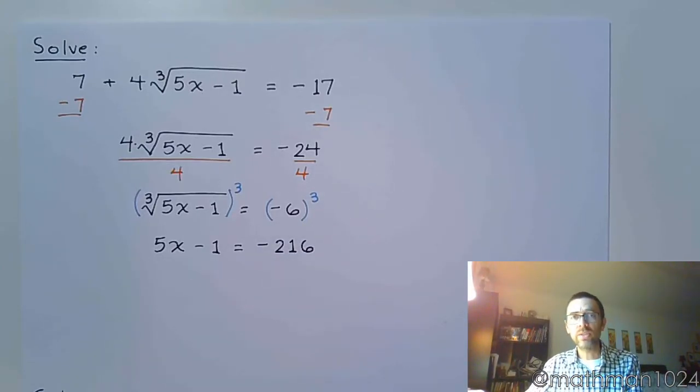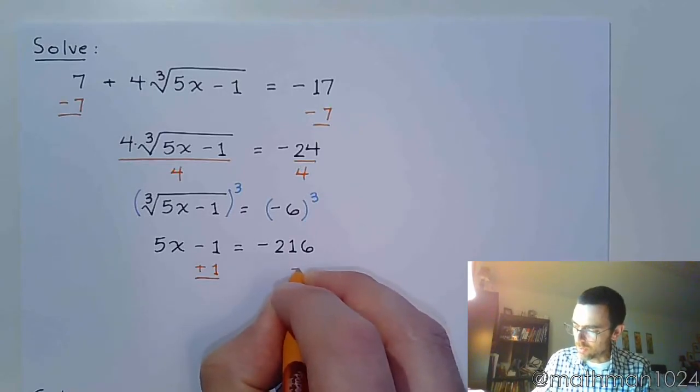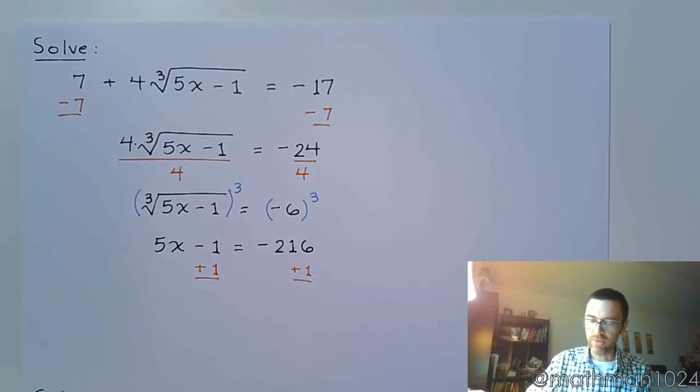And at this point, it's just a nice, simple, linear equation for us to solve. So now we just add 1 to both sides. And then we divide by 5.